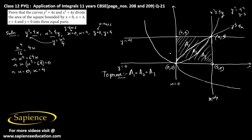Now how do we find area A1? The equation of the top straight line is y equals 4, and the branch of the parabola above the x-axis is y equals 2 root x. So the area A1 equals the integral from 0 to 4 of (4 minus 2 root x) dx.